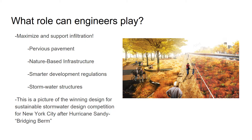What can engineers do to tackle this problem? Lots! Hydrologists and stormwater engineers can design infrastructure like pervious pavement to maximize infiltration and reduce runoff, commit to using green infrastructure, develop strong development regulations, and use stormwater structures such as swales, basins, and berms. This is a picture of the winning entry for the Sustainable Stormwater Design Competition in New York City after Hurricane Sandy. The project Bridging Berm won a $335 million grant to absorb storm surge and protect New York City's Lower East Side.